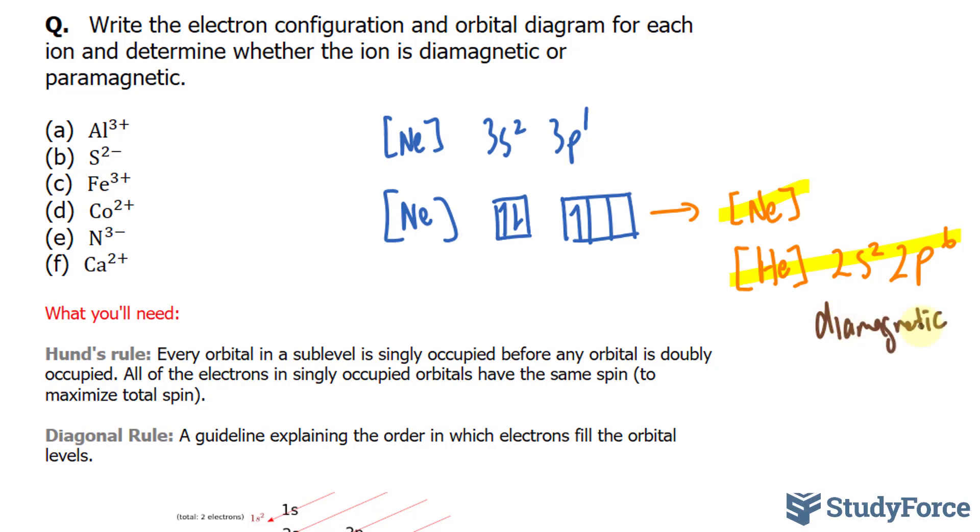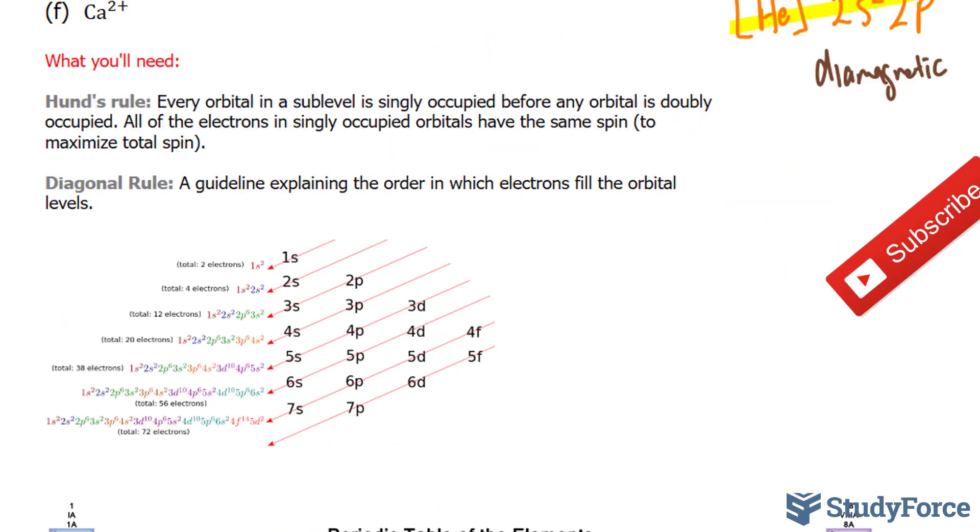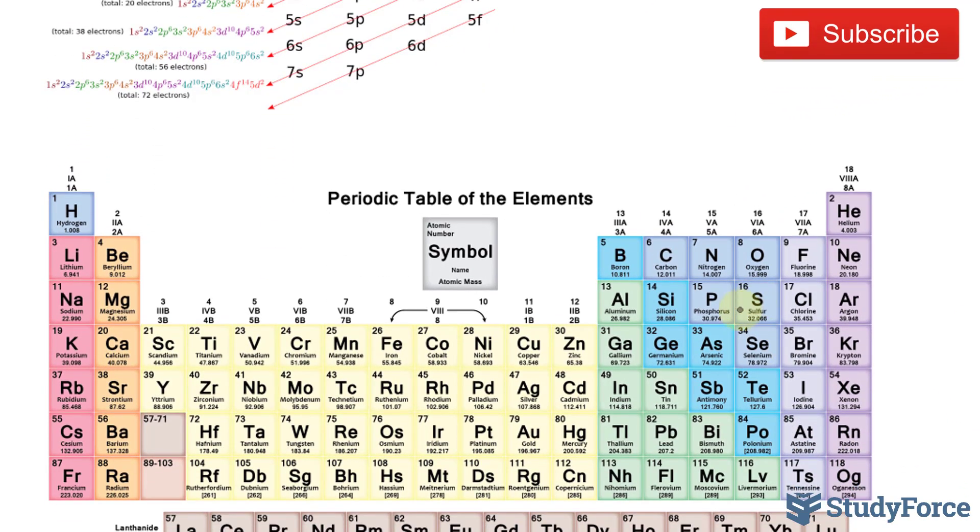Let's do B. For B, we have sulfur, and it has a charge of 2 minus. This means that it has gained two electrons. Sulfur is found right here. And so technically, we are creating an electron configuration for argon. Let's go ahead and do our work up here so we don't have to scroll back and forth. The preceding noble gas is, once again, neon. So I'll write down neon.